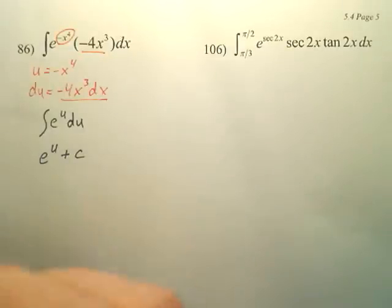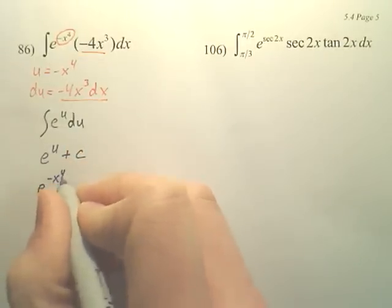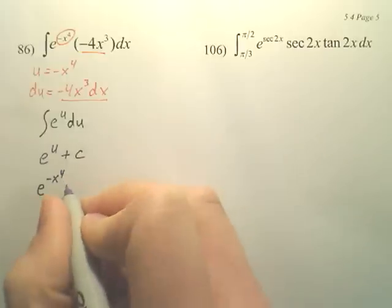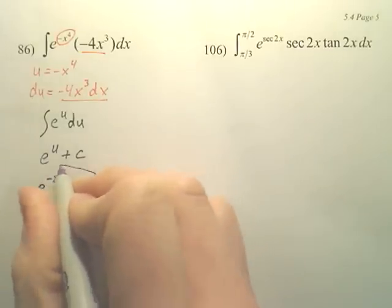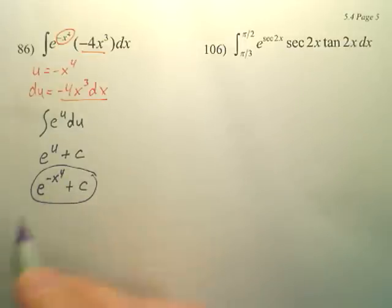So our last step, plug u back in. So it's e to the negative x to the fourth plus c. By the way, this could also be 1 over e to the x to the fourth power plus c, because the negative could also want to drop the power down.